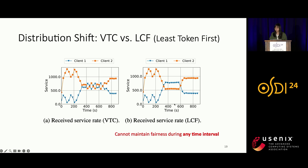On a synthetic workload comparing VTC and LCF, there are three phases. In the first phase, client one is underloaded with interleaved active and inactive sessions; both schedulers show client two receiving more service, which is desired. In the second phase, both clients are overloaded. VTC quickly adapts and they receive similar services for fairness. But in LCF, stale counters cause client one to receive more service earned from the previous phase, breaking the fairness requirement over any time interval.